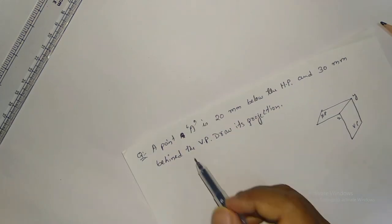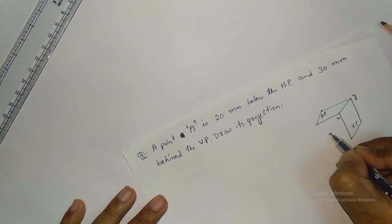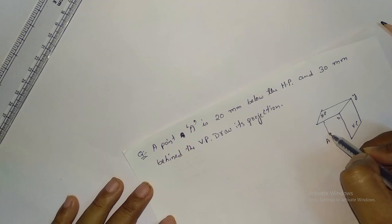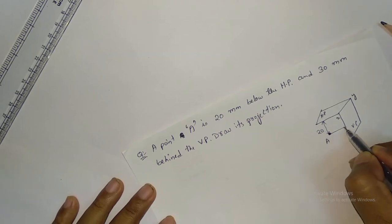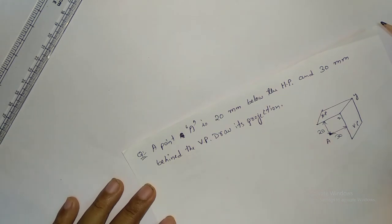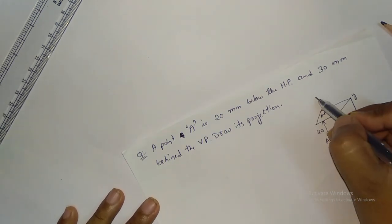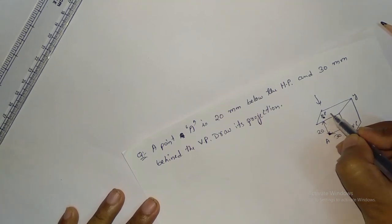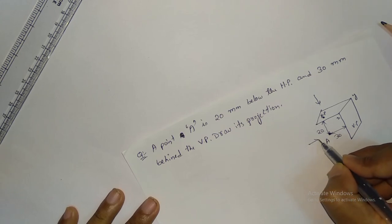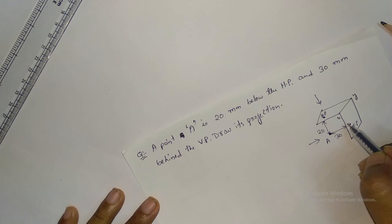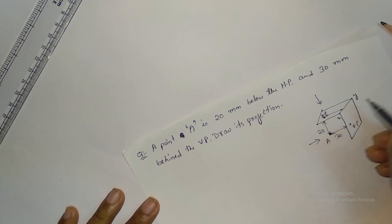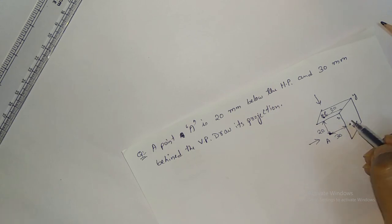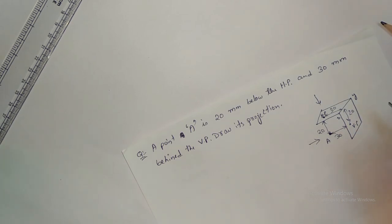Next question: point A is 20mm below HP and 30mm behind the VP. Draw its projection. From the top view you can see the projection in this plane. The front view is seen here. From XY, the front view will be 30mm above XY and the top view distance is 20mm.